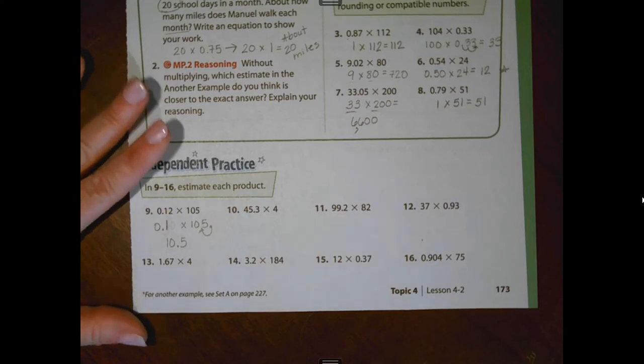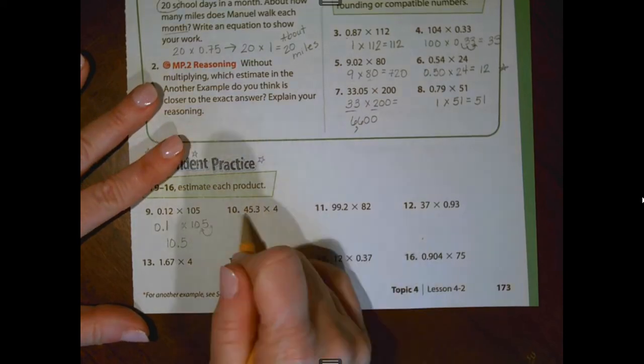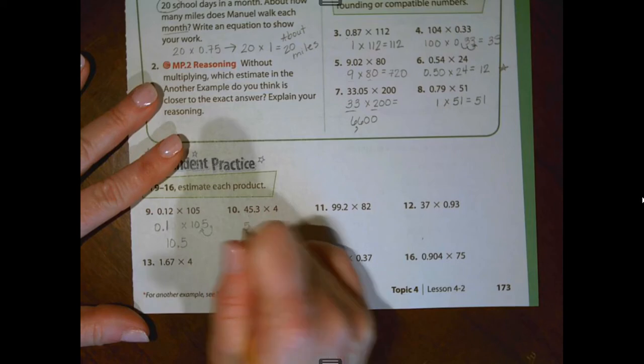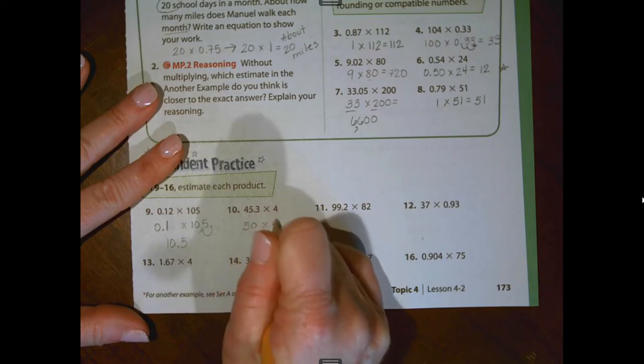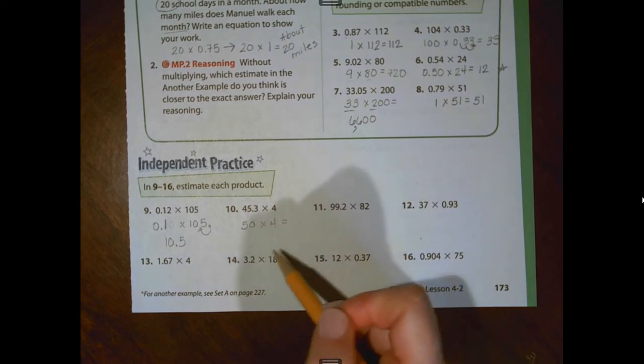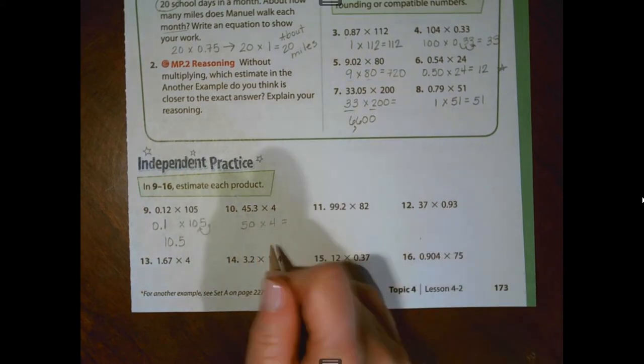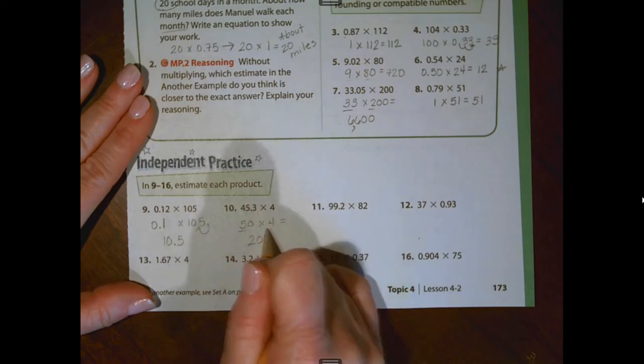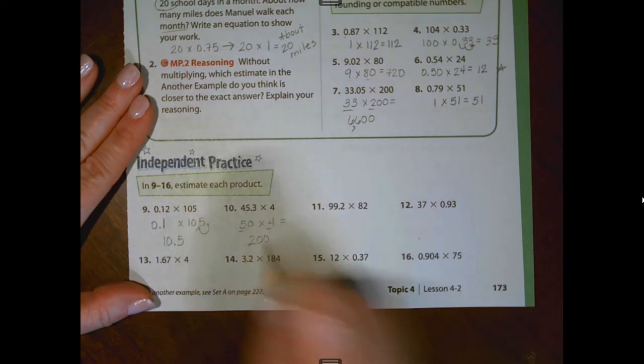Estimating number 10. I would probably make this whole number 50 and leave this 4. I'm just using some rounding, rounding to the front digit. I know that 5 times 4 is 20. You also know you could do 5 times 4 is 20 and then annex that zero.